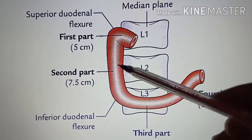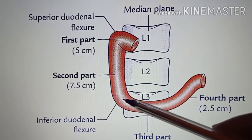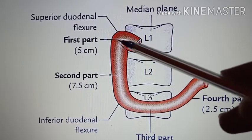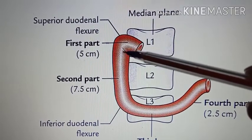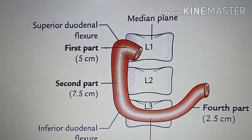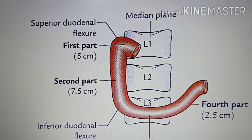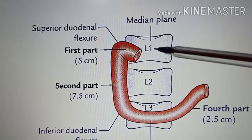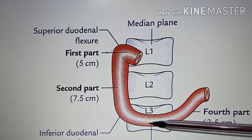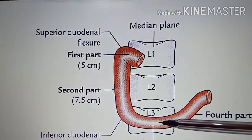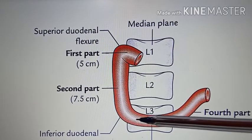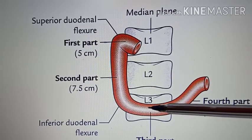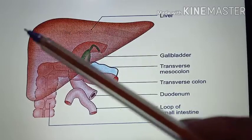The second part of the duodenum is 7.5 cm long. It begins at the superior duodenal flexure and passes downwards in front of the medial part of the right kidney. It extends from L1 up to the lower border of L3, where it curves towards the left at the inferior duodenal flexure to become continuous with the third part.